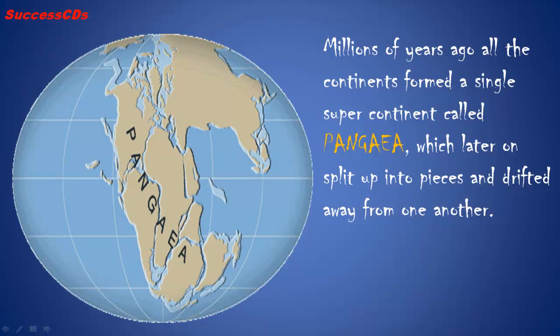Millions of years ago, all the continents formed a single supercontinent called Pangaea, which later on split up into pieces and drifted away from one another.